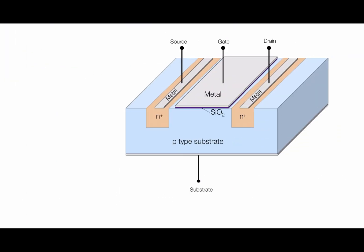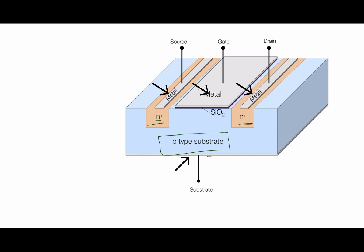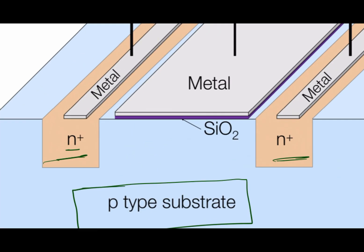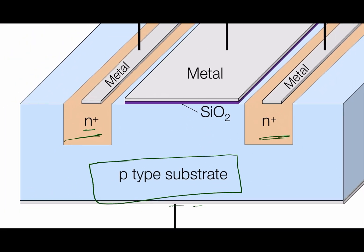Now we will go through the device structure. You can see the image — this is the N-channel enhancement type MOSFET. The first part is the substrate, which is made of a P-type semiconductor. The two highlighted regions are N-type semiconductor, denoted as N+, meaning heavily doped N-type semiconductor. The metal contacts are shown here, and there is also SiO2 — silicon dioxide — which is the oxide layer. So you can see the metal, oxide, and semiconductor all present in the MOSFET structure.